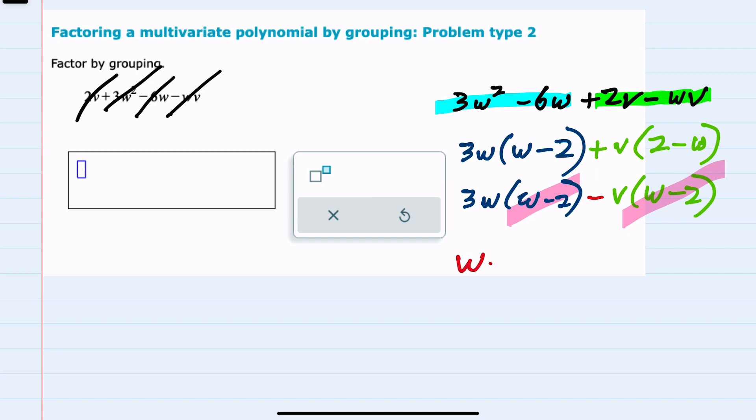I now have this w minus 2 that is the same in each term, which means I can factor out a w minus 2. From the first term, I still have the 3w. And from the second term, if I factor out a w minus 2, I still have the minus v.